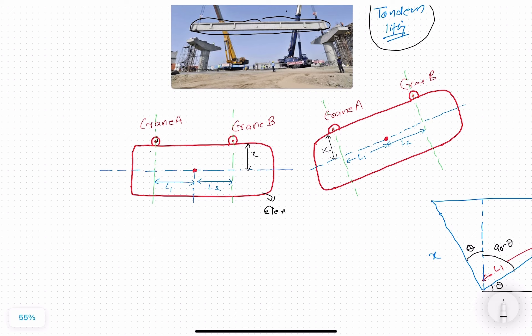This is the lifting point for crane A, and this is the lifting point for crane B. The lifting point means the lifting rigging will be arranged there. The crane B lifting point is at a distance of L2 from the center of gravity of the object, and the crane A lifting point is at a distance of L1 from the center of gravity. X is the vertical distance of the lifting point from the center of gravity. This is the data provided to us.